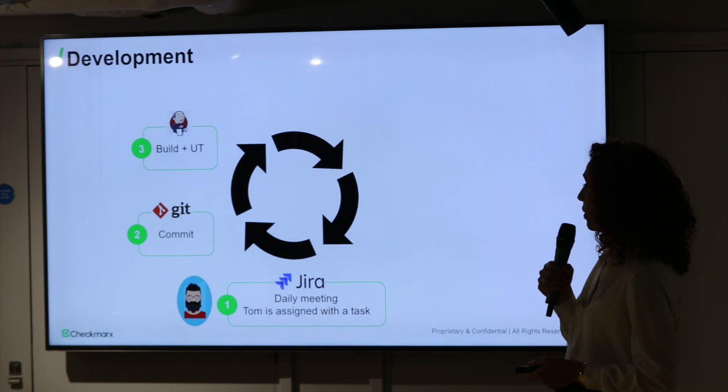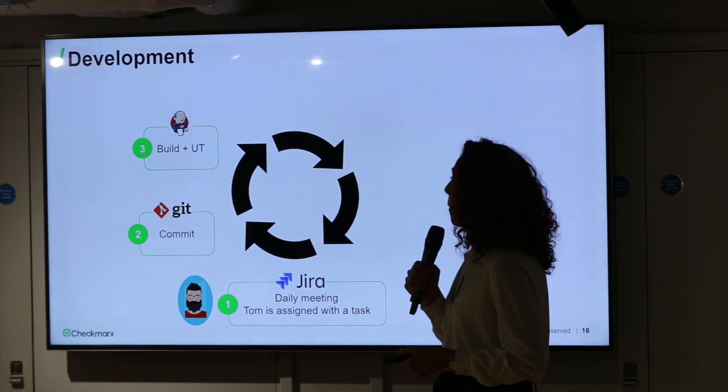Once Tom is done coding, he commits the code, which triggers the CI process based on Jenkins. The CI starts with build and unit testing, then scanning — we scan our code using our own Jenkins plug-in (available in the Jenkins marketplace as the Checkmarx plug-in). It's a very short, incremental scan — in my teams it takes about a minute tops. Next is automated component testing, where IAST comes into play. IAST is interactive application security testing, running while the tests are running, deployed on the same servers.